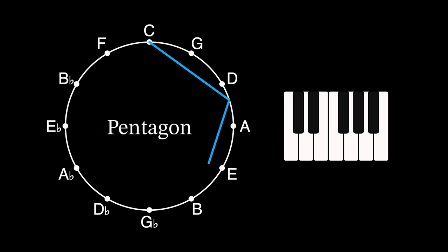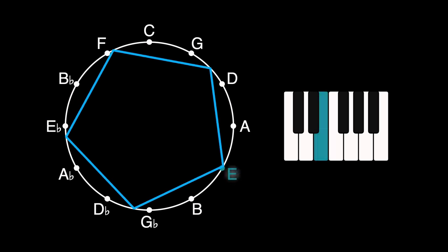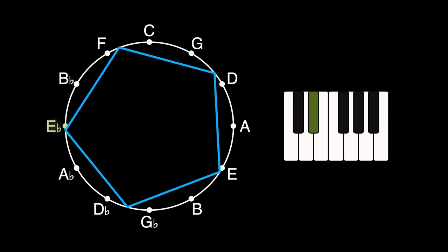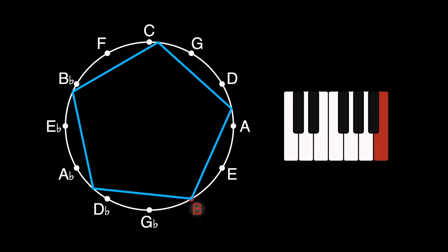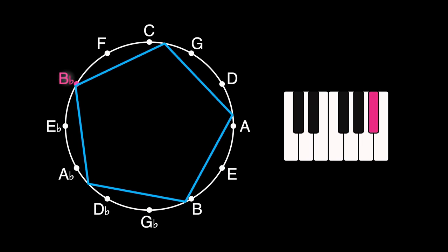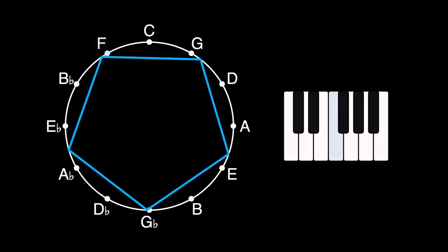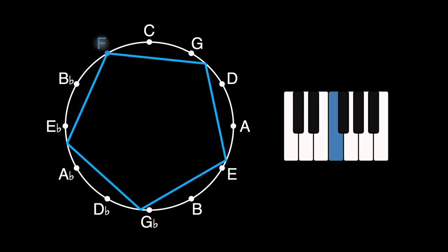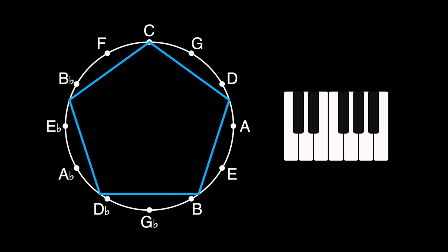The pentagon is the first shape where the vertices don't all land on notes at the same time. Before rotating this shape and listening to the results, take a guess as to what you think it will play. Pause the video if you want. When I first ran this, I was a bit surprised by the result. It's playing a chromatic scale, all 12 notes in ascending order. Add this to your list of useless but interesting facts.